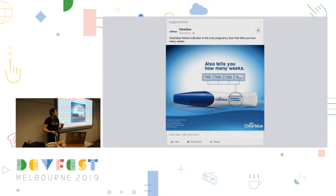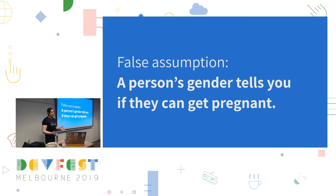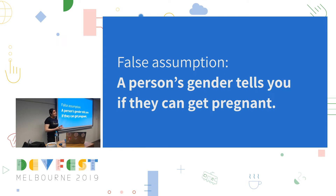But there's a false assumption here — and that false assumption is that a person's gender tells you if they can get pregnant. Because of course, not every woman, trans or otherwise, can get pregnant. And Facebook aren't the only social media company who've made interesting assumptions about gender in the past.